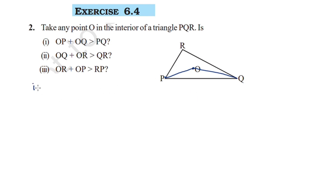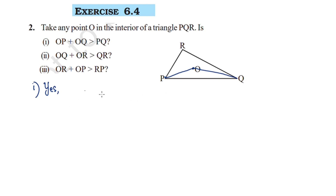Now let's answer the first question. The reason is that the sum of the length of any two sides of a triangle is greater than the length of the third side.